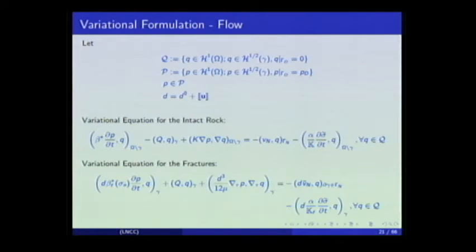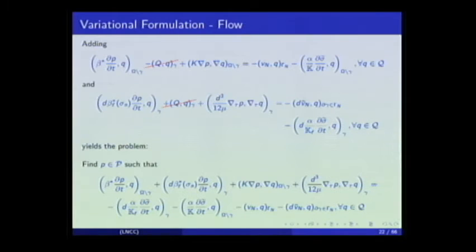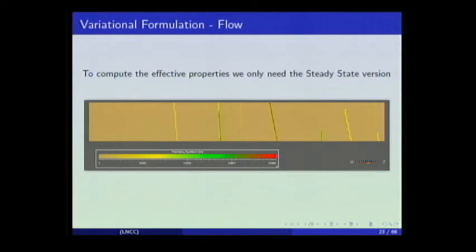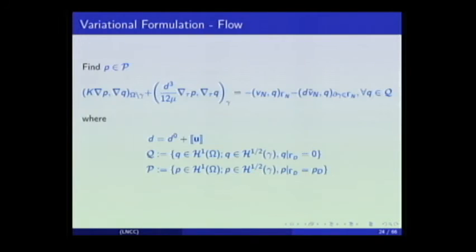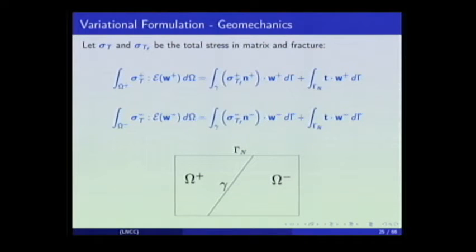The variational formulation for flow is straightforward. We use the H1 function space since pressure is continuous along the fracture. The variational equation for the intact rock and for the fracture are written separately, and when we add them, these terms cancel, giving us the problem for the entire domain. Since our objective is to compute effective properties of a cell, we only need the steady-state version, which is a simplified form.